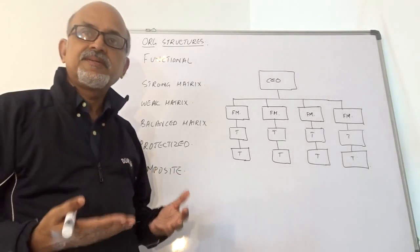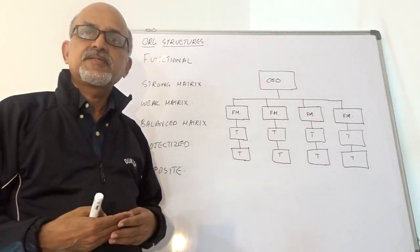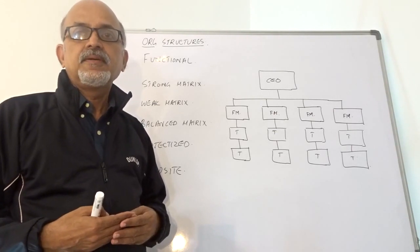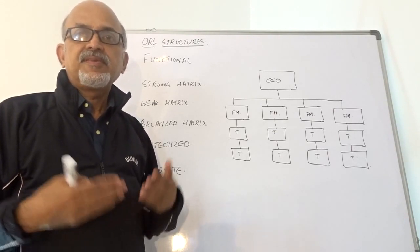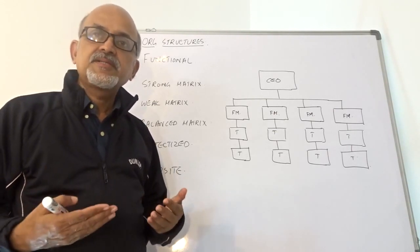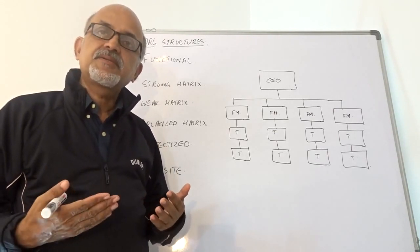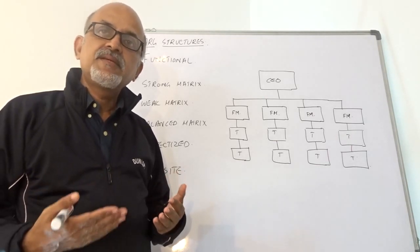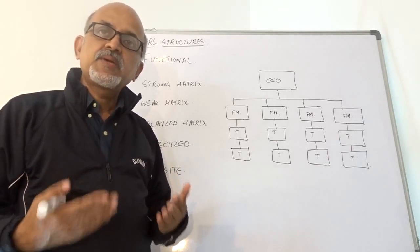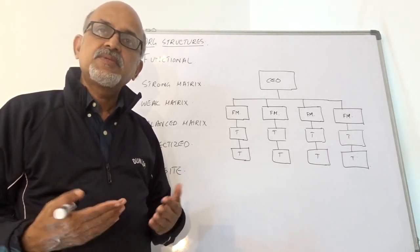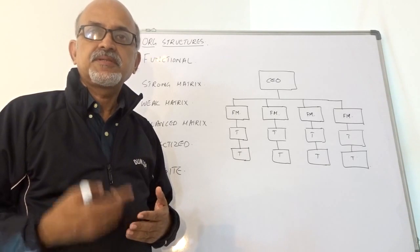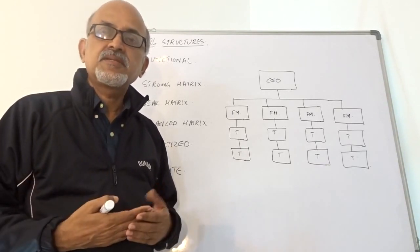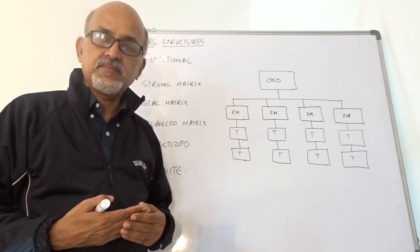Let us take a look at the different organizational structures. If you understand the organizational structure, it is very easy to predict the power equations within the organization, which has a direct bearing on the organizational culture as well.